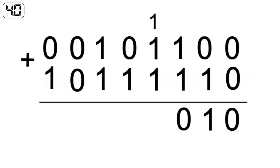1 plus 1 plus 1 is 3, which in binary is 11. So we drop a 1 and carry a 1. 1 plus 1 is 2, again that's 10, so we drop a 0 and carry a 1.